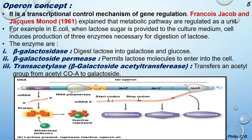Now moving to the operon concept, which is a transcriptional control mechanism of gene regulation. François Jacob and Jacques Monod in 1961 explained that metabolic pathways are regulated as a unit — processes carried out together as a single unit.